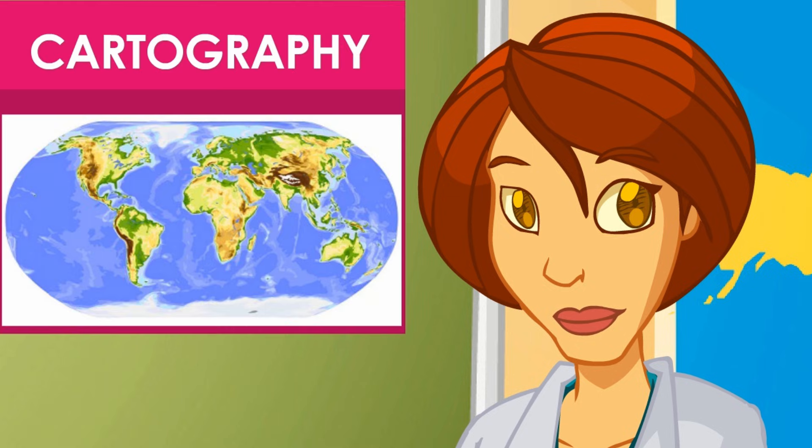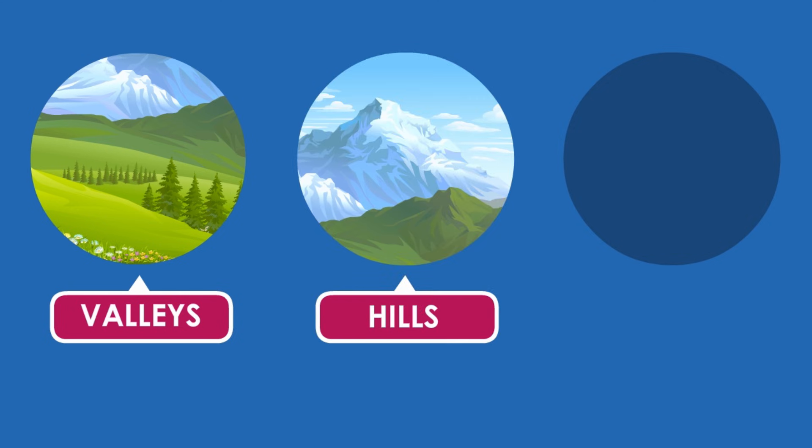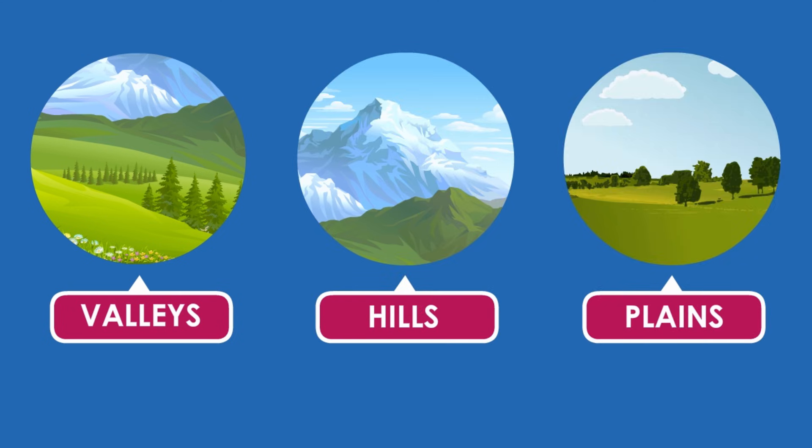The science of making maps is called cartography. It takes into account that the relief comprises valleys, hills, plains, or any other land form on the Earth's surface.